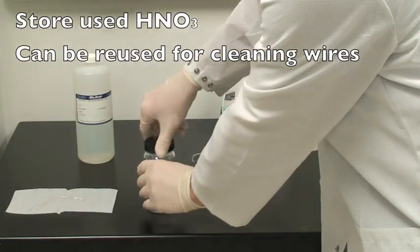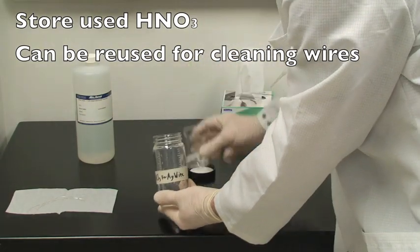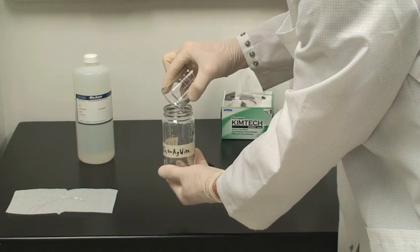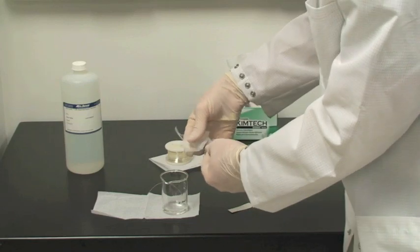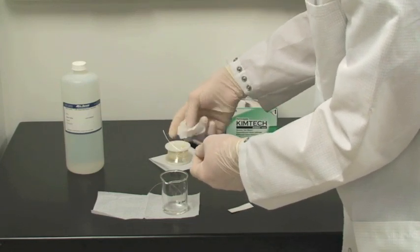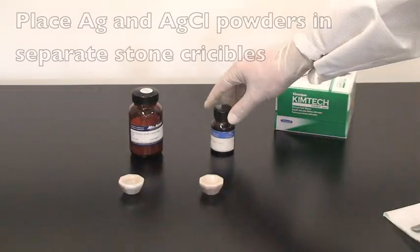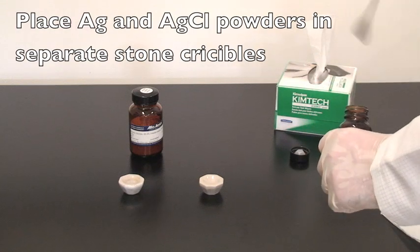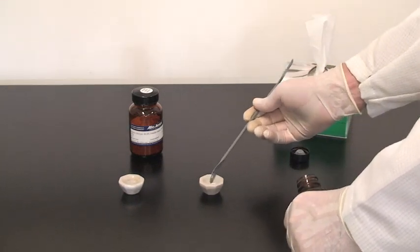Then return the used nitric acid to the marked storage container so that it may be re-used by other students. Finally, rinse the electrodes with distilled water and wipe clean. We will now place a small amount of silver powder into one container and silver chloride powder into a separate container.